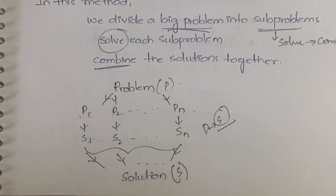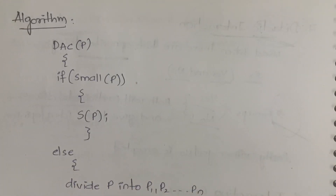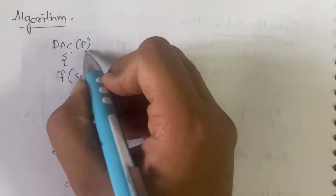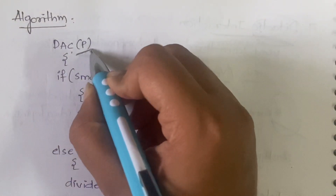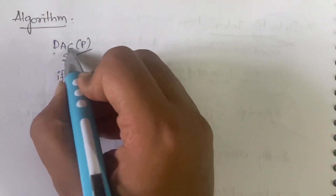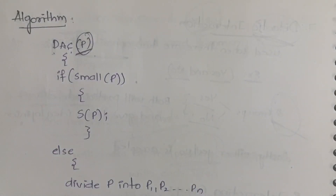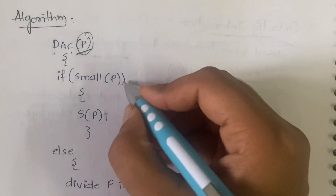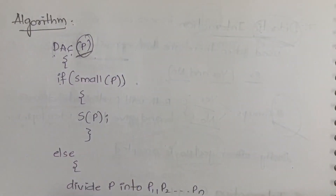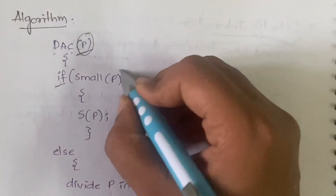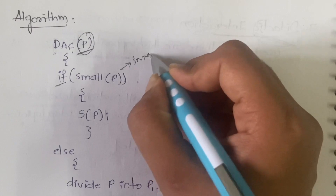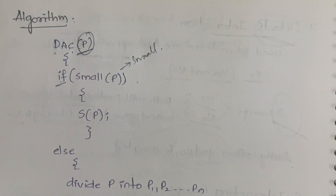Now let us try to understand with an algorithm — you can write this in your exam. You call DAC(P), which stands for divide and conquer of P, meaning you are passing a problem into the divide and conquer algorithm. Next, there is a condition: if P is very small, you cannot further break it.